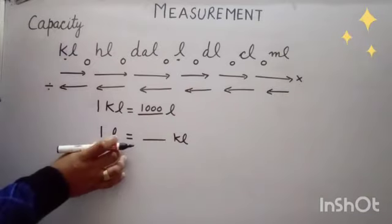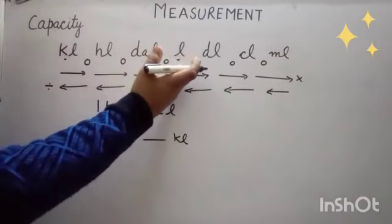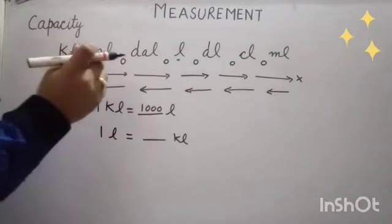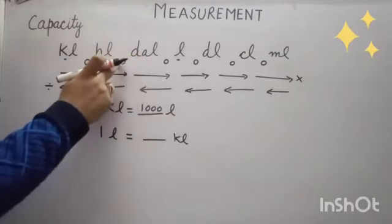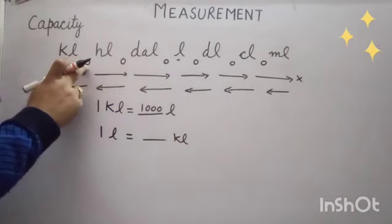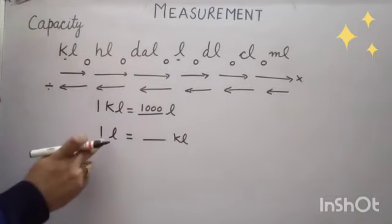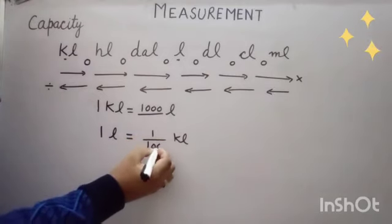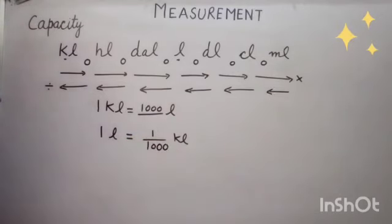In this question we are moving from smaller to bigger. Again there is a gap of 3 zeros between these 2 units, and this time 1 liter is equal to 1 upon 1000 kiloliters.